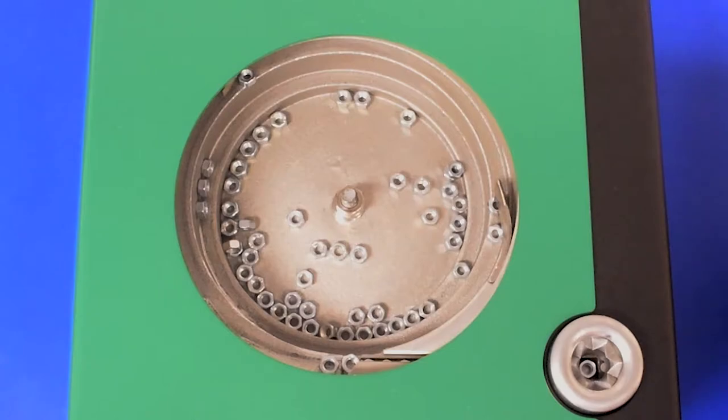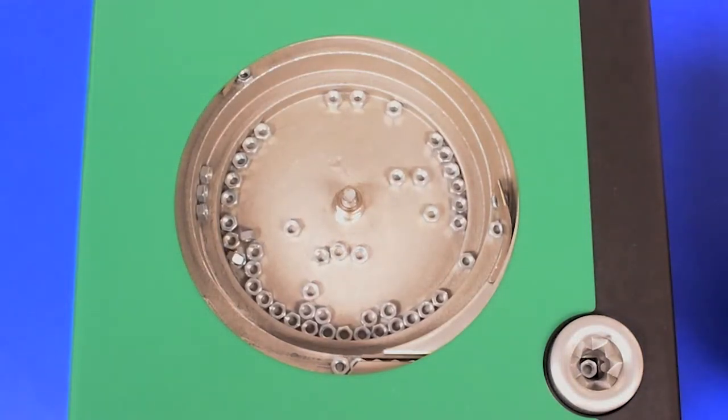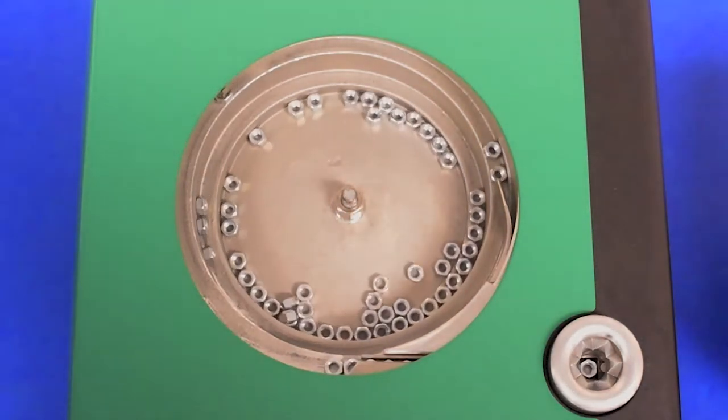I'll go ahead and turn the bowl on and you will see it start to vibrate. We start out at a very low setting to get the nuts moving and climbing up around the bowl. I'll turn up the vibration a little bit to get them to the point where we can present them.